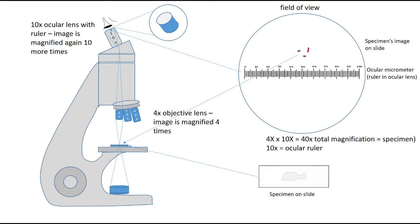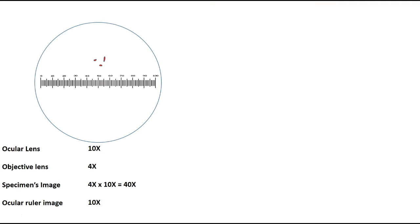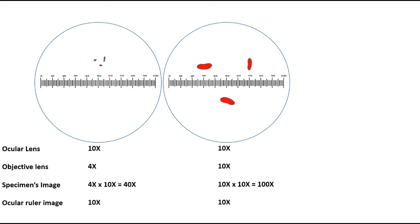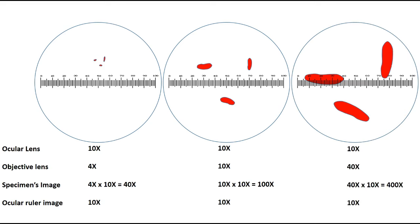In theory, the ocular lens should stay the same because you're not going to change your ocular lens. Therefore, the calculated values assigned to the ocular micrometer will need to reflect how the image size changes in proportion to the objective lenses, whereas the ocular ruler stays the same. We're going to have to recalculate for each objective lens to compensate for that difference.